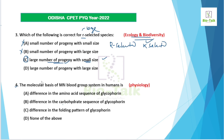The next question asks about the molecular basis of the MN blood group system in humans. The MN system is distinct from the ABO system. The difference in the MN phenotype lies in the amino acid sequence — specifically in the amino acid sequence of glycophorin proteins on the red blood cell surface.